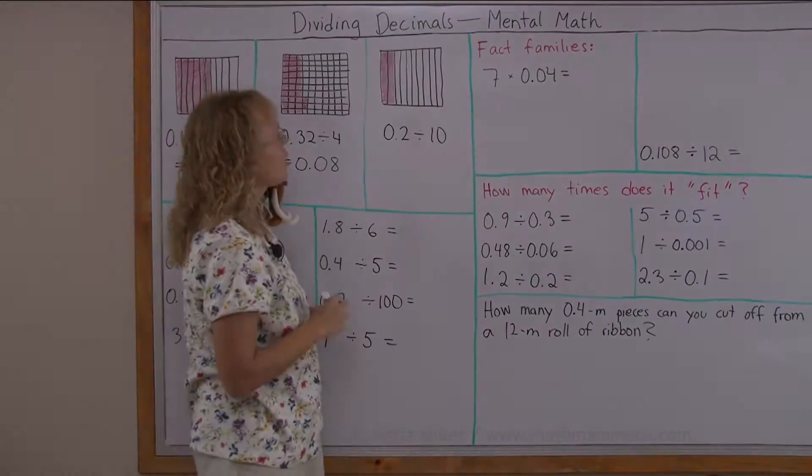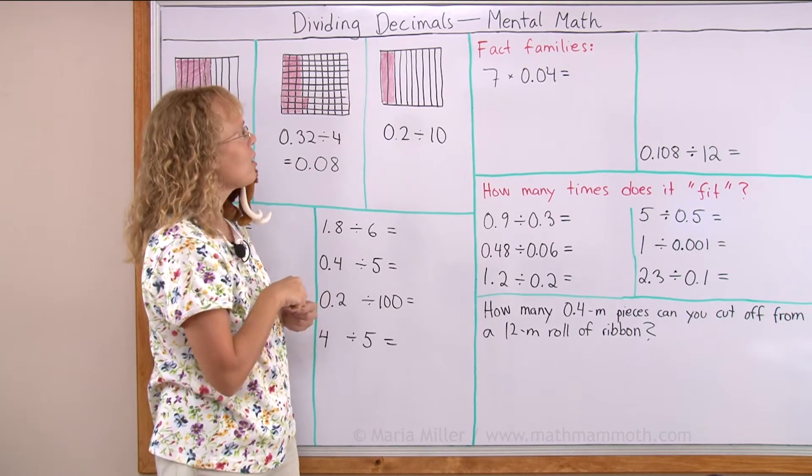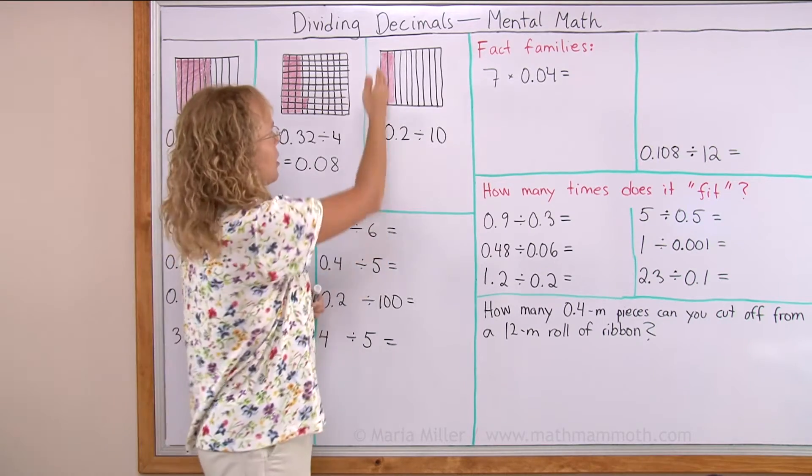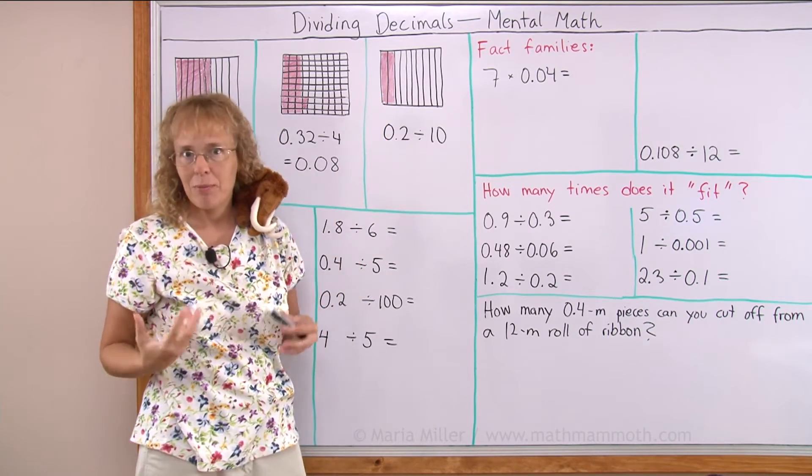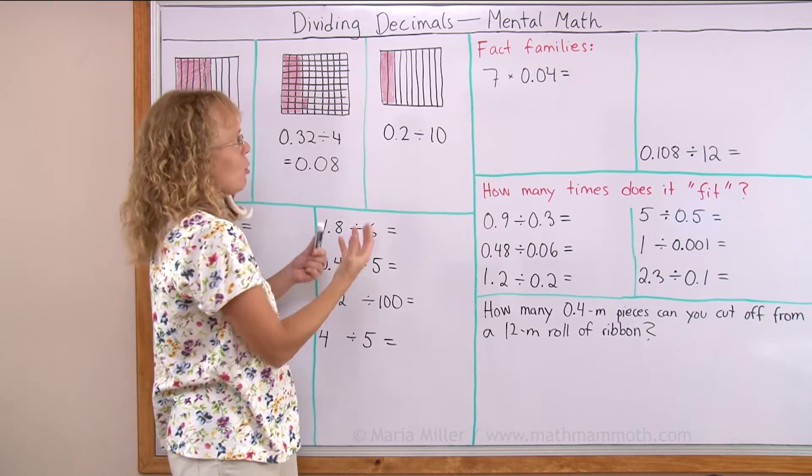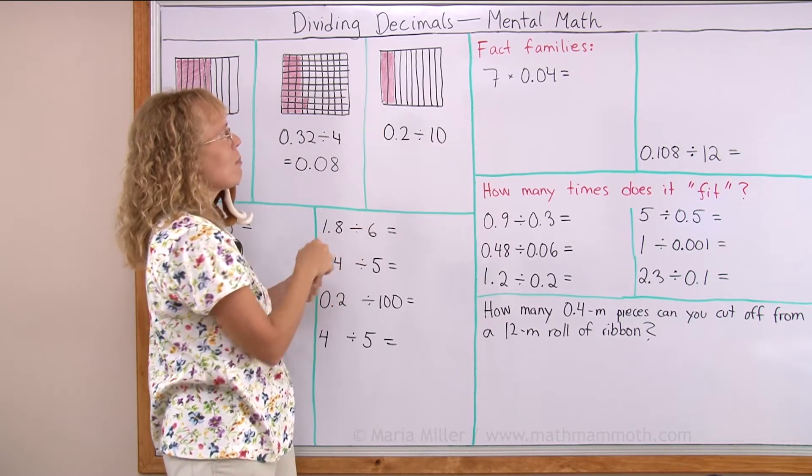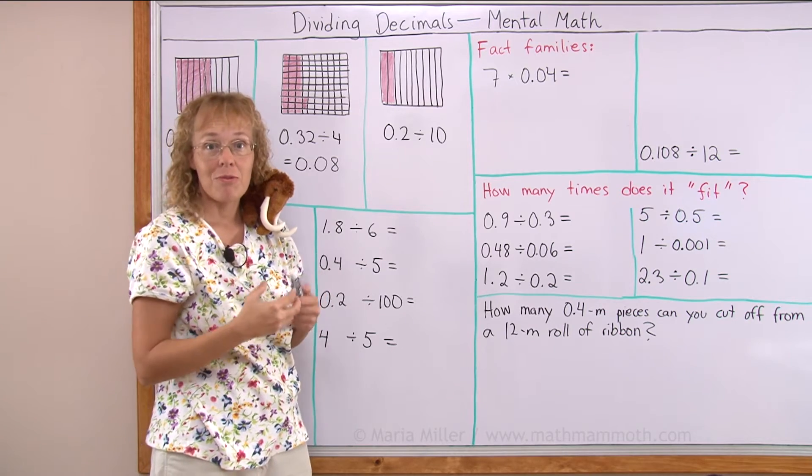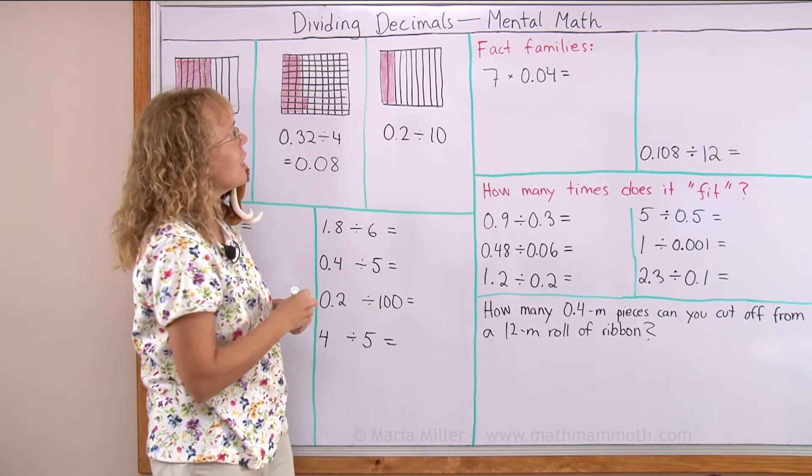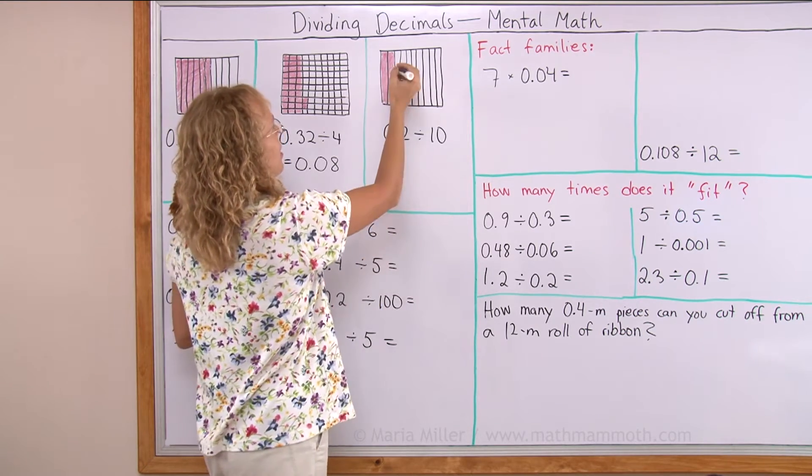This situation is a little bit different because it looks like we cannot divide these two tenths between ten people. But let's say if you had a chocolate bar in that shape and you needed to divide it between ten people, you divide it further into smaller pieces, right? And we can do the same.